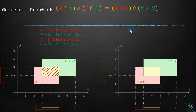A cross C will be this red colored rectangle, and B cross D will be represented by this green colored rectangle. It is clear that their intersection is this yellow colored rectangle. Let us highlight it.